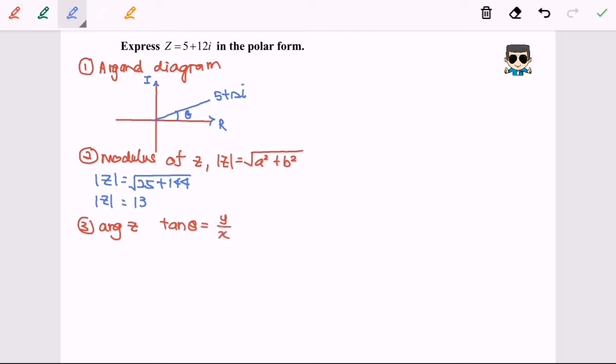So in this case, the tangent theta is equal to 12 over 5. So the theta will be equal to 67.38 as a basic angle.